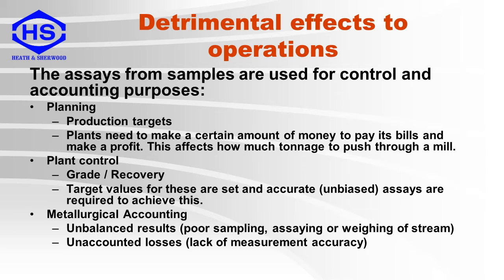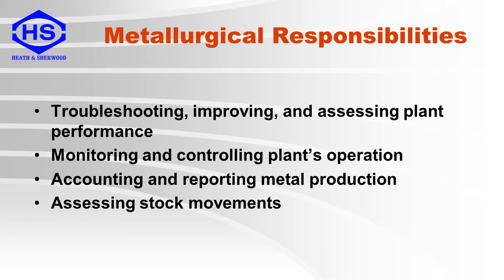A lack of measurement accuracy can lead to unaccounted losses. These are some of the metallurgists' responsibilities which require accurate sampling: troubleshooting, improving and assessing plant performance; monitoring and controlling a plant's operation; accounting and reporting of metal production; and assessing stock movements throughout the plant.